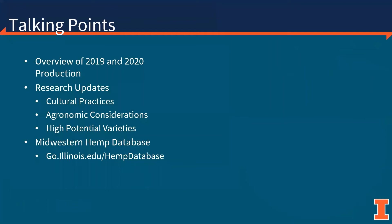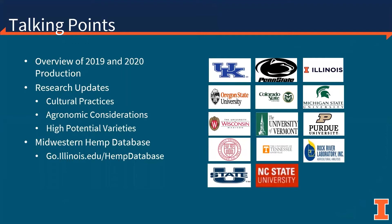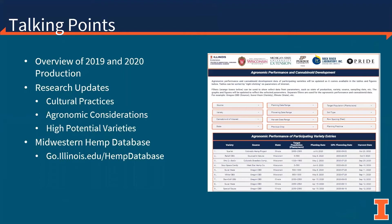We are going to take a look at the following topics: an overview of the 2019 and 2020 growing seasons, and updates in hemp research in both grain and fiber and cannabinoid production here at the University of Illinois. Throughout the presentation, you will also find information from land grant institutions across the country. I would like to highlight the development of the Midwestern Hemp Database Project, which is available on our website with the link on the slide here.